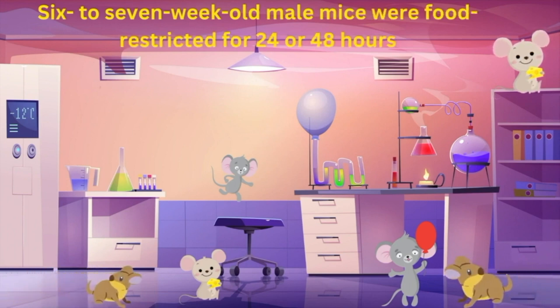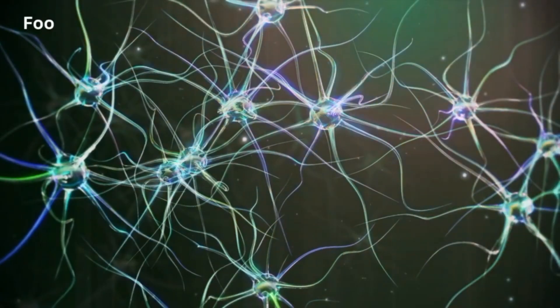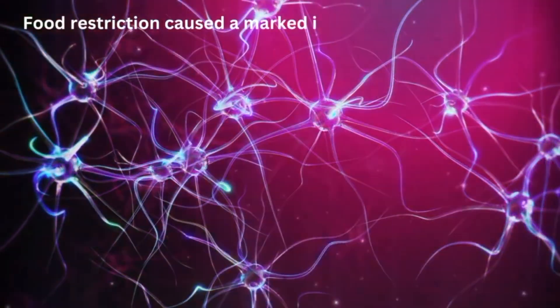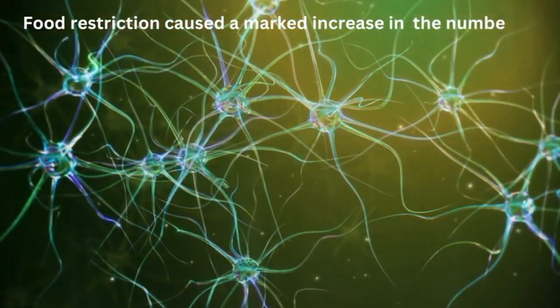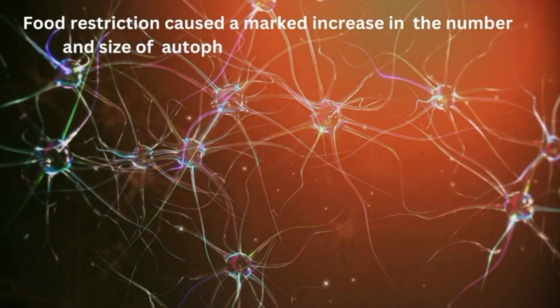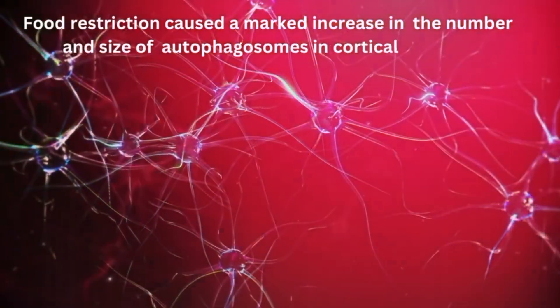It was found that food restriction caused a marked increase in both the number and the size of neuronal autophagosomes in the cell body of cortical neurons. These changes were present after 24 hours of food restriction and were even more dramatic at 48 hours.